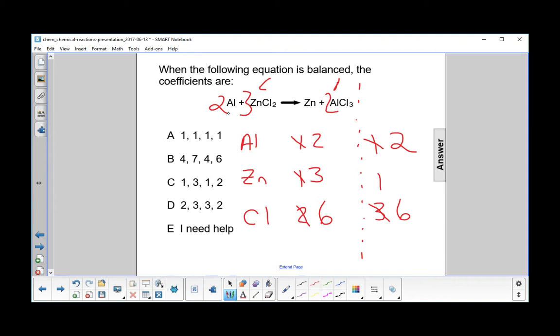Now let's look at the zincs. It looks like we have to take this, multiply it by three. So we put a three here in front of the zinc. And now it looks like all the numbers check.